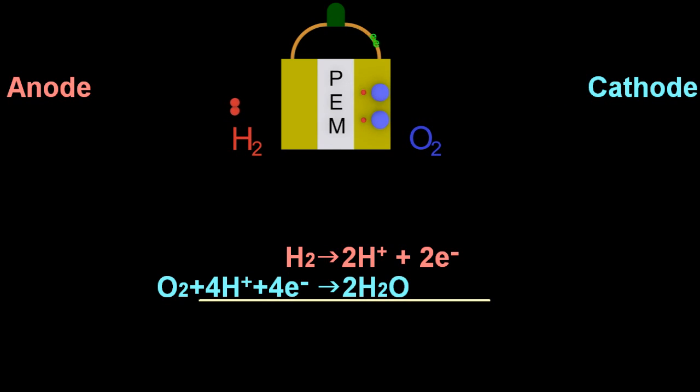Oxidation is loss of electrons equation. And four electrons in the reduction equation. Reduction is gain. So if I double the top equation, so I can add those equations up now. Cancelling out what appears on both sides to give me the equation for the fuel cell. Oxygen and hydrogen makes water.